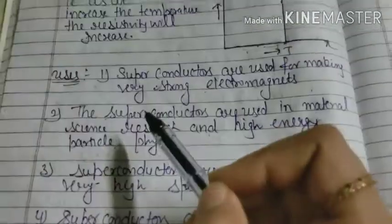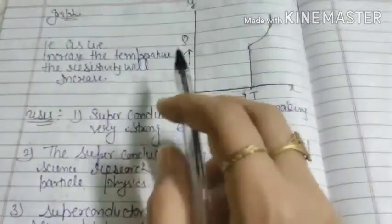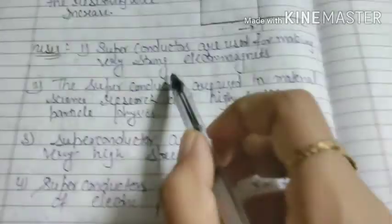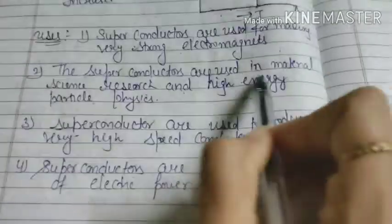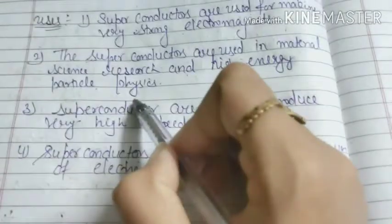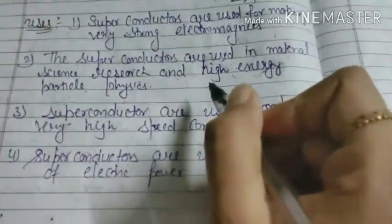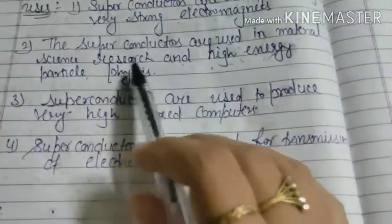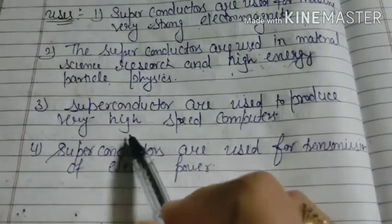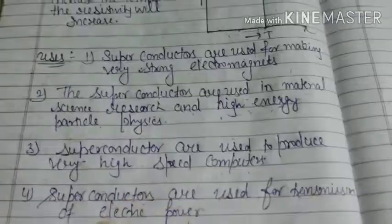Superconductors के uses: low temperature पर किसी भी normal conductor को superconductor बनाया जा सकता है। Superconductors का उपयोग strong electromagnets बनाने में होता है। इन्हें material science research और high energy particle physics में use किया जाता है — जैसे bosons, leptons, gamma rays, beta rays की study। Superconductors are also used to produce very high-speed computers and for transmission of electric power।